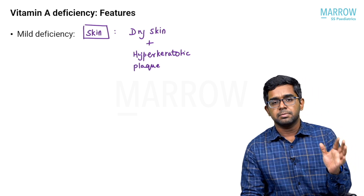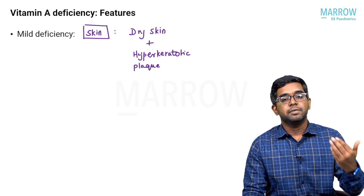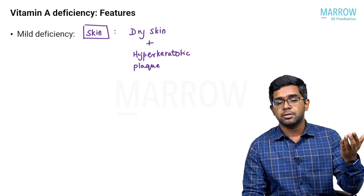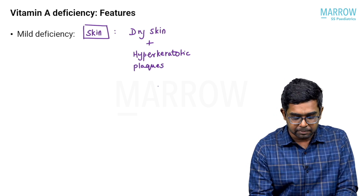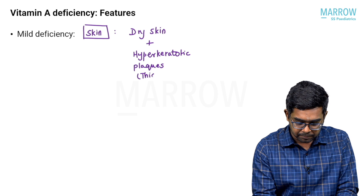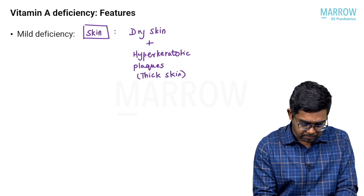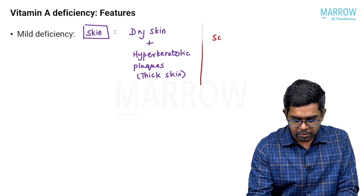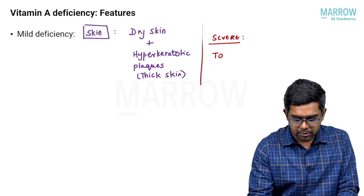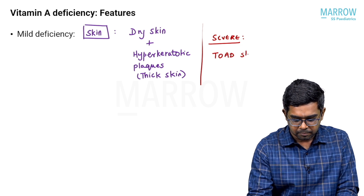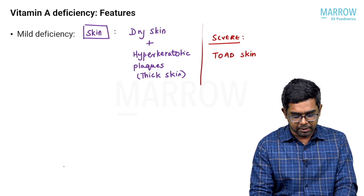Vitamin A down-regulates keratin synthesis. So when vitamin A deficiency occurs, there is up-regulation of keratin synthesis, thereby causing hyperkeratotic plaques resulting in thick skin. In severe cases, the skin becomes so thick it would be called toad skin. These are the features of vitamin A deficiency involving the skin area.